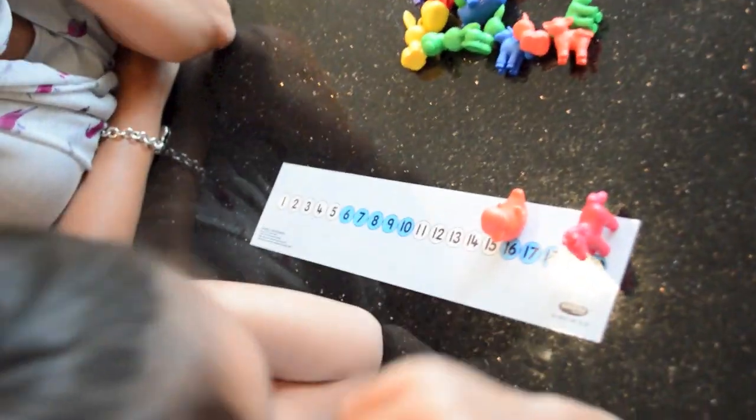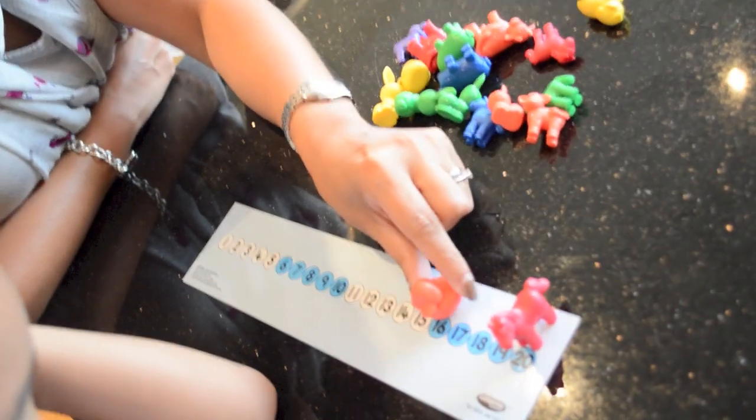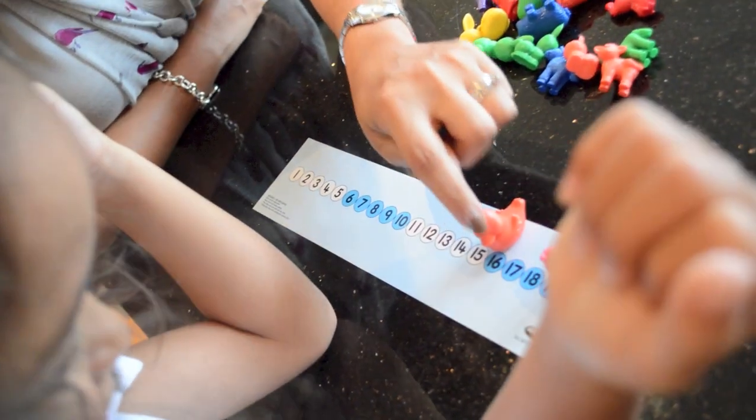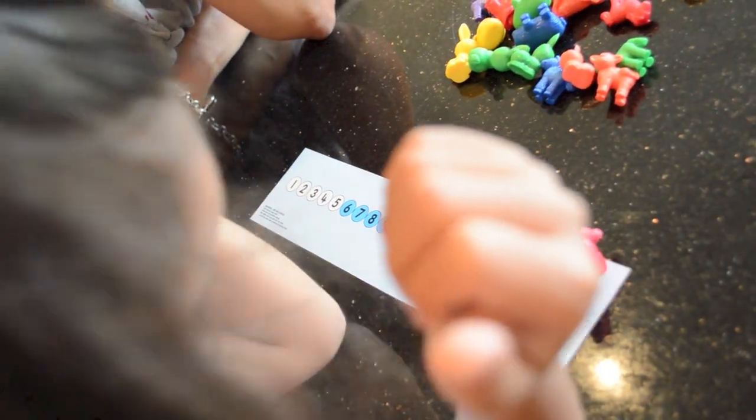Which is the biggest number there? Twenty. Twenty. Now, what number is this little one on? Sixteen. And how many places would he have to move to get to the horse? How many more numbers?